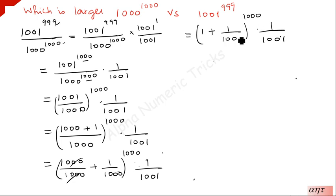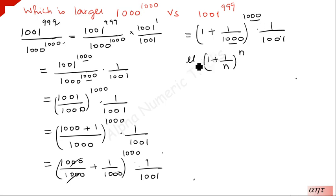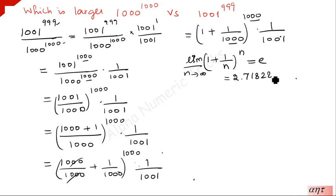Now this is our expression. Both terms have 1000, so we can write this as (1 plus 1/n) to the power n, where n equals 1000. If you take the limit as n tends to infinity, this value equals e, where e is approximately 2.71828 1828 459045...